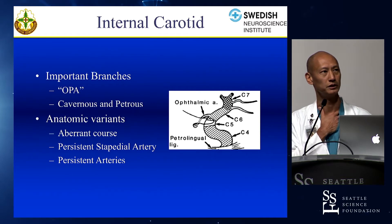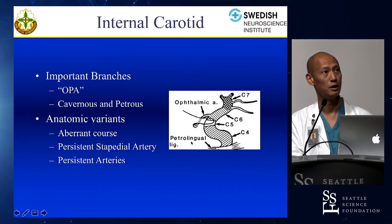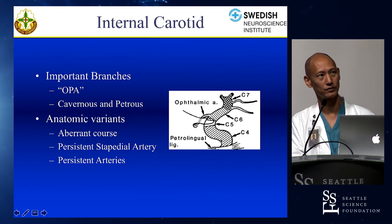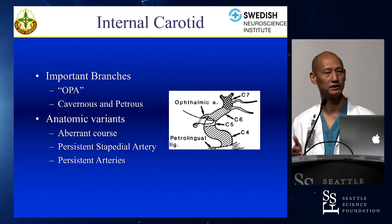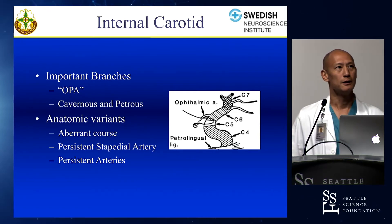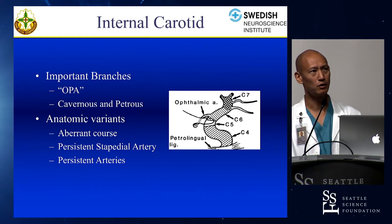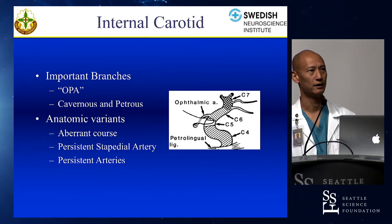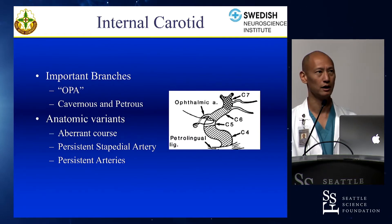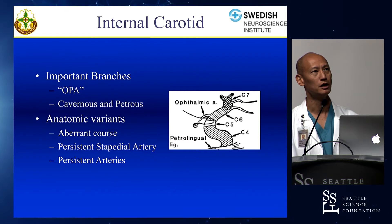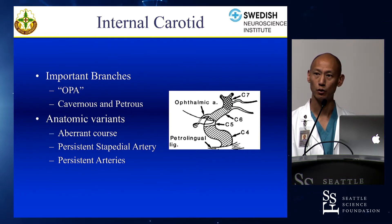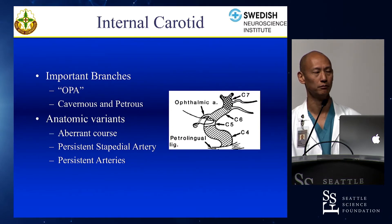The two cavernous branches to know arise typically from the posterior genu: the inferolateral trunk (ILT), which arises laterally in the horizontal segment or posterior genu and supplies the cavernous sinus and cranial nerves running through it; and the meningohypophyseal trunk, which takes a more medial course, also typically from the posterior genu. The meningohypophyseal gives rise to dura of the posterior genu of the cavernous segment and is involved in fistulas — particularly anterior tentorial fistulas, which receive blood supply from the MHT.